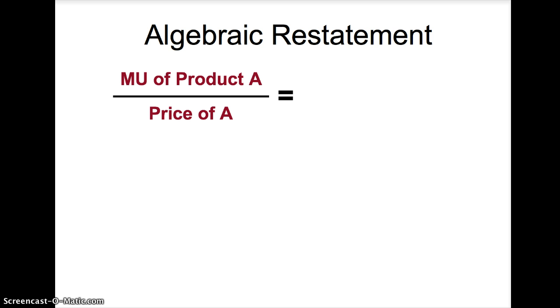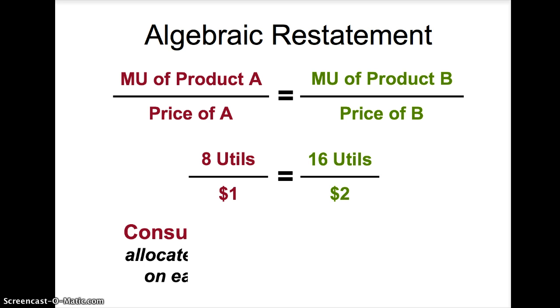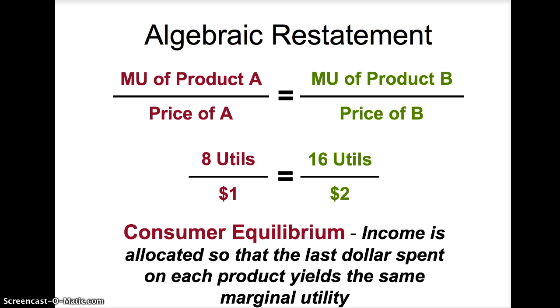We can analyze this process by using an algebraic formula for utility maximization. Marginal utility of product A divided by the price of good A equals the marginal utility of product B divided by the price of product B. At 2 units of product A, marginal utility is 8 utils and the price is $1. At 4 units of product B, marginal utility is 16 utils and the price is $2. Simplifying this formula will result in 8 utils per dollar equaling 8 utils per dollar. The consumer is at equilibrium. Income is allocated so the last dollar spent on each product yields the same marginal utility.